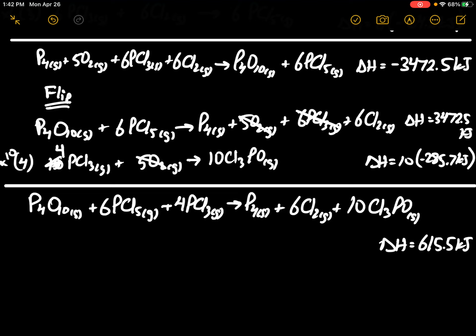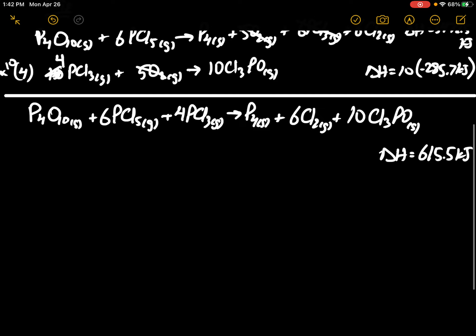And then we are going to take this and we've got to add number 1 to this. So if I add number 1 to this, we will get P4, 6Cl2 gas, to 4PCl3 gas.